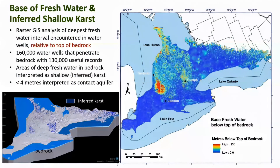There are two maps shown here. The larger shows depth of occurrence of freshwater beneath the bedrock surface as reported in water wells — areas of red, yellow, and light blue are the deepest intervals, while dark blue shows areas where freshwater occurs generally less than four meters below the top of bedrock. The smaller map shows interpretation of the areas of deepest freshwater as shallow inferred karst in the 3D model.